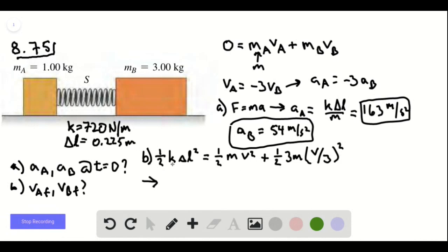And if you do the combining in the algebra, we find that va, which is the velocity for a, is equal to the square root of three k delta l squared divided by four m. And now this is 5.23 meters per second.